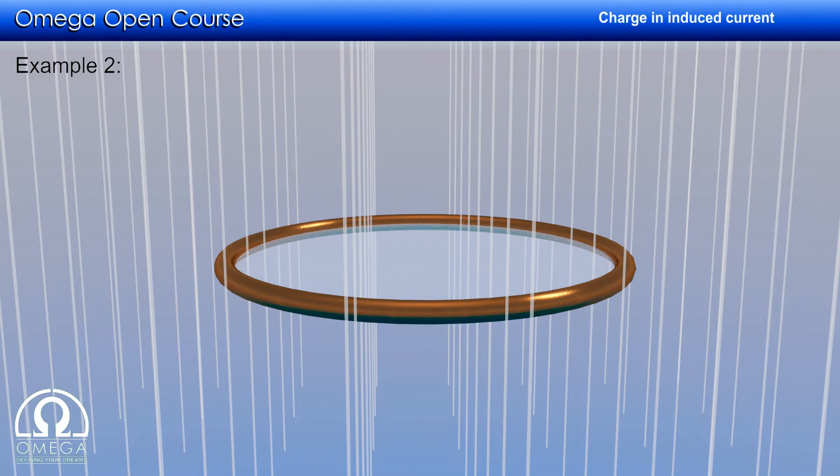Suppose that the magnetic field is directed in vertically downward direction. Also, let us assume that the direction of normal of the ring is downward. So the initial flux through the ring is πA²B.